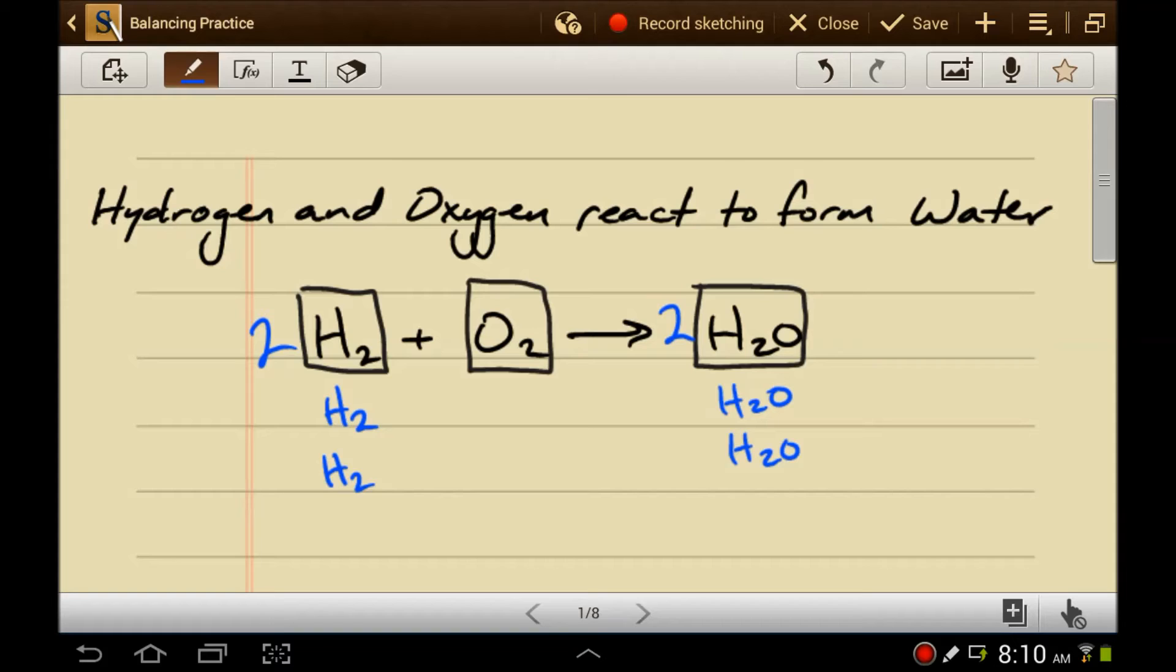This reaction is now balanced. There's 4 hydrogens on this side, there's 4 hydrogens on this side. There's 2 oxygens on this side, there's 2 oxygens on that side. So, rule number 1, you have to balance an equation using coefficients.